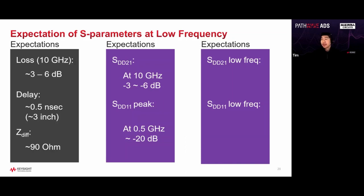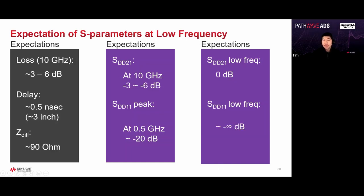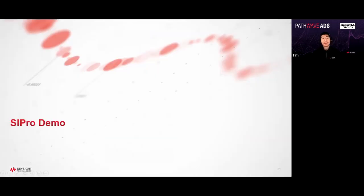At low frequency I expect SDD21 to be almost 0 dB, because at very low frequencies the wavelength is so large that all interconnects seem transparent to the signal. Likewise for the return loss SDD11, at low frequency it should be minus infinity — a very large negative dB value. Now we've prepared our expectations for both insertion loss and return loss, and we're ready to run a 3D EM simulation.